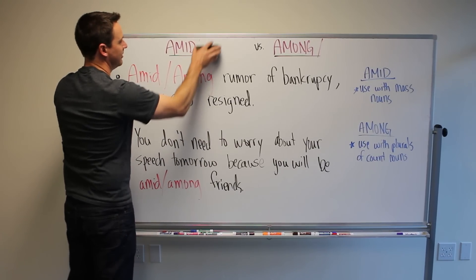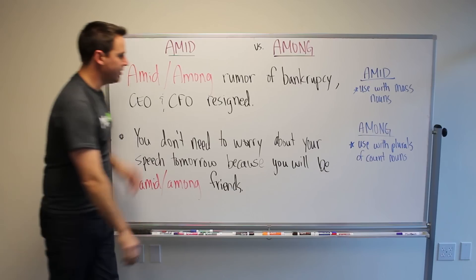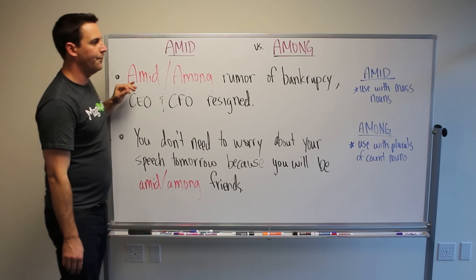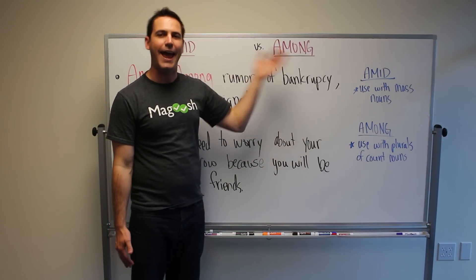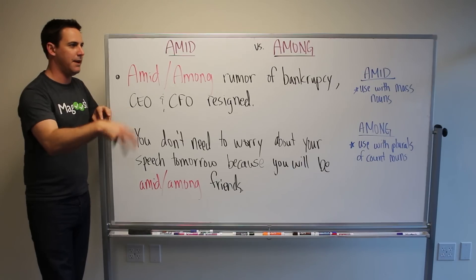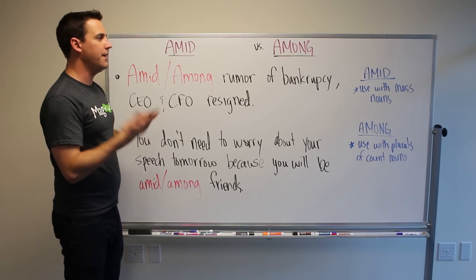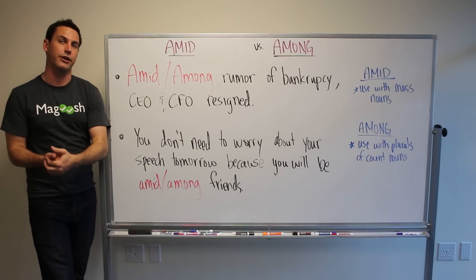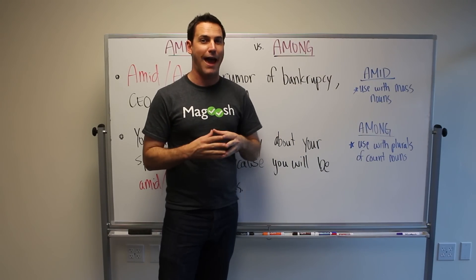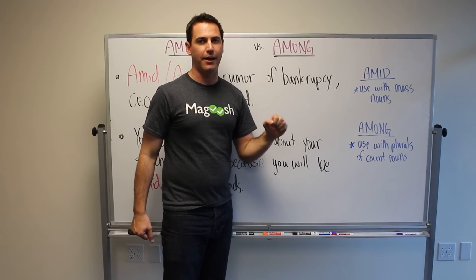So really the question is: what is 'amid' versus 'among'? I have two example sentences here to illustrate this point. The tough thing is that these have very similar meanings — they kind of mean 'mixed in with' or 'around.' But what we can say is that 'amid' you use with mass nouns, and 'among' we use with plurals of count nouns.